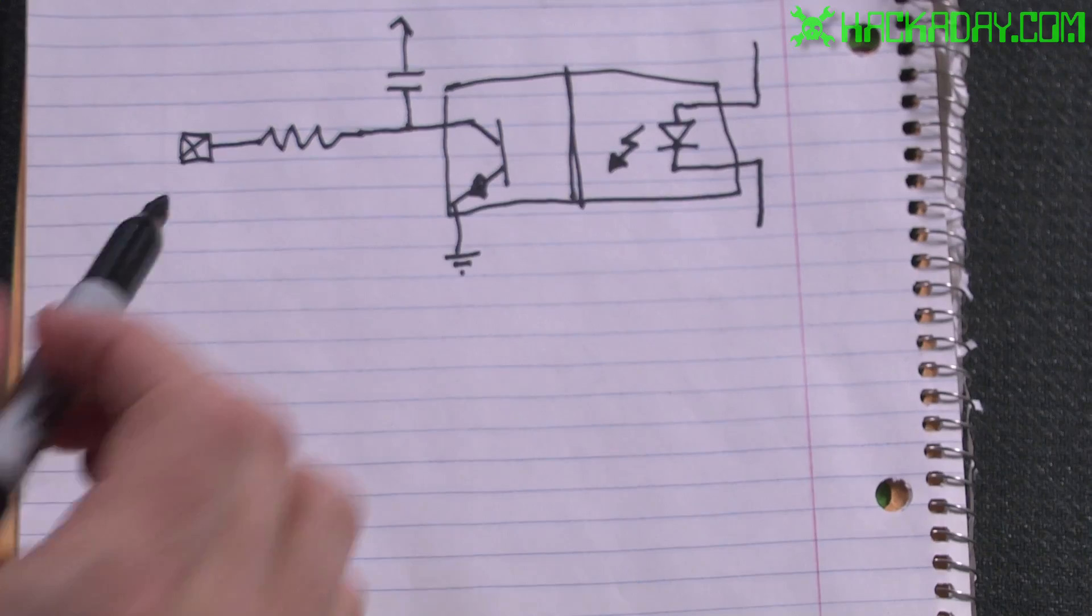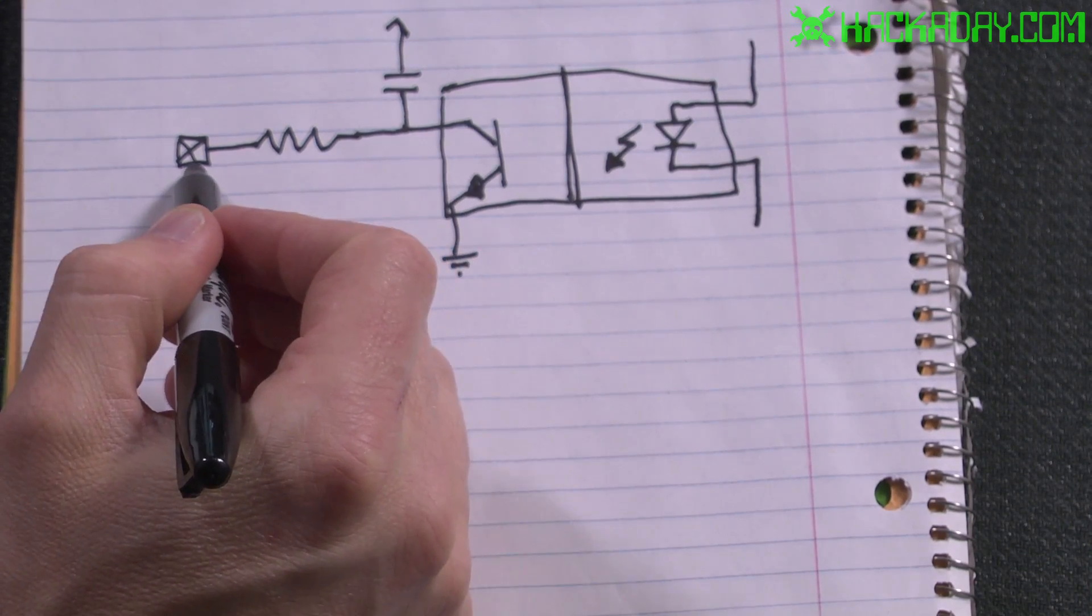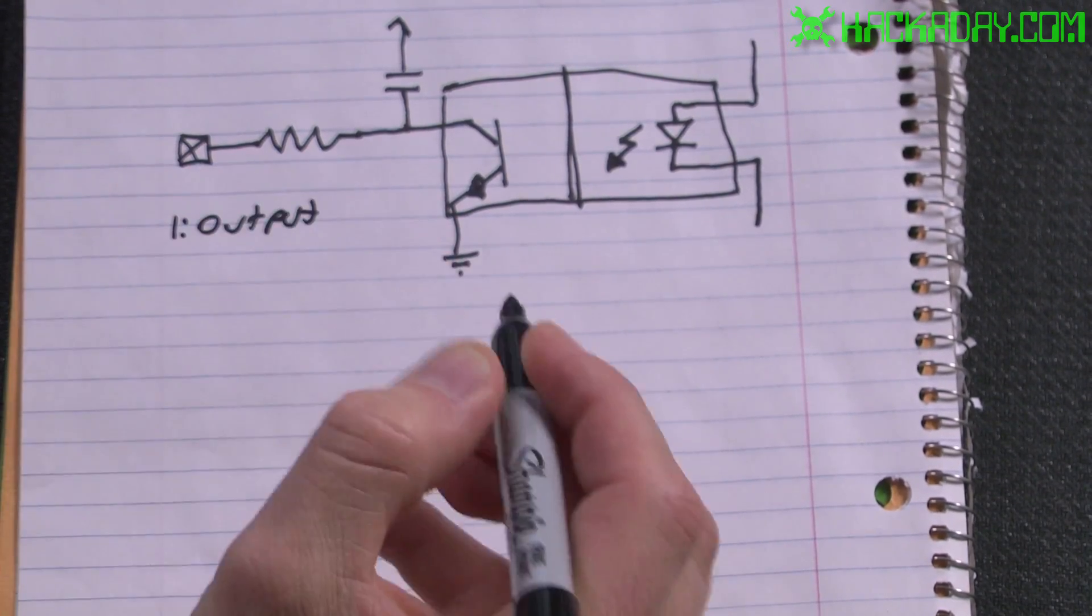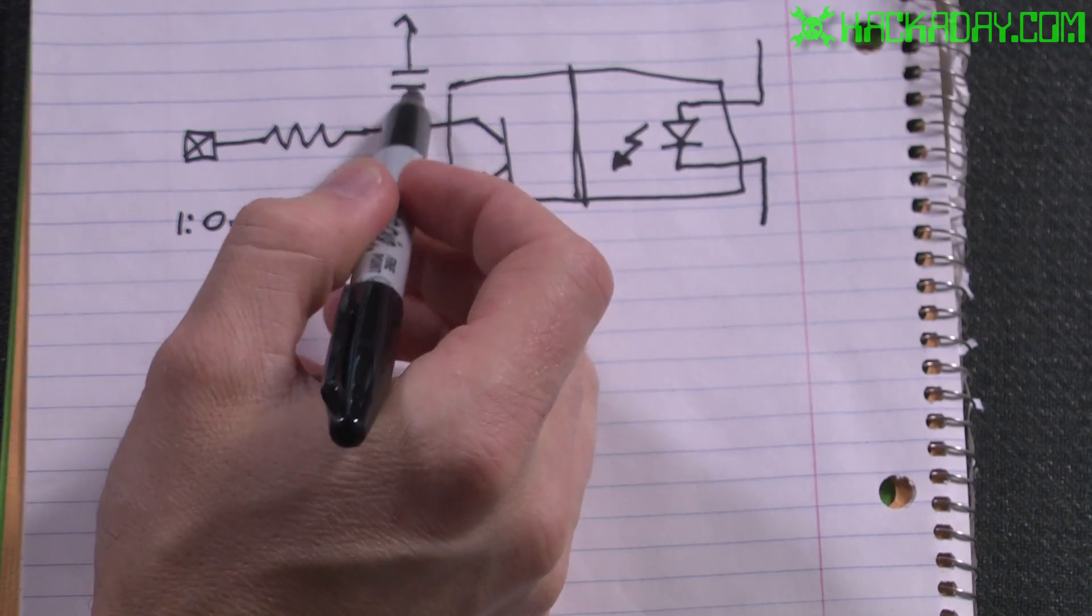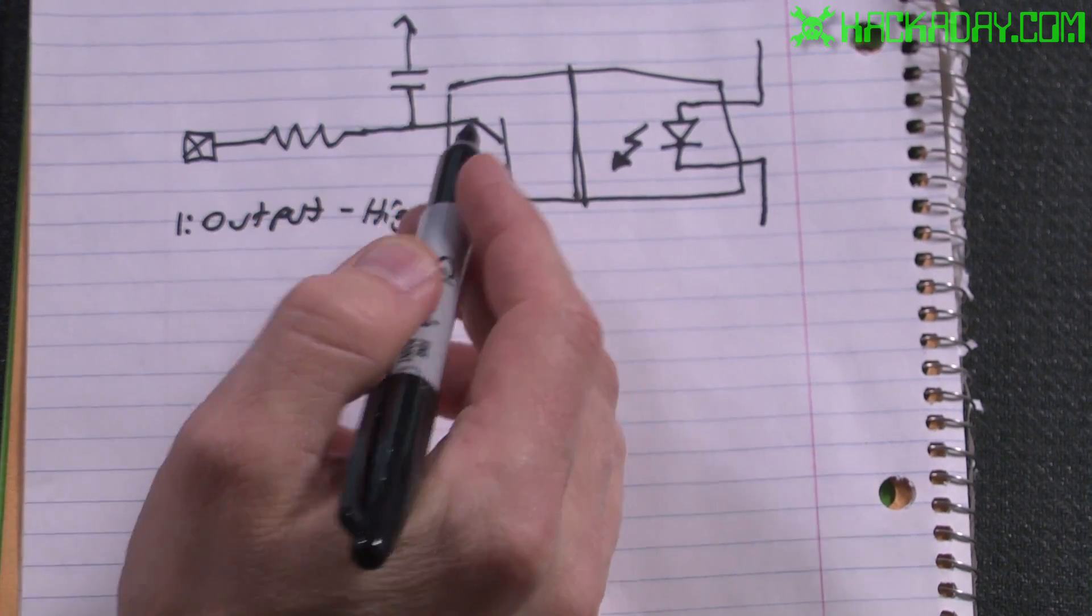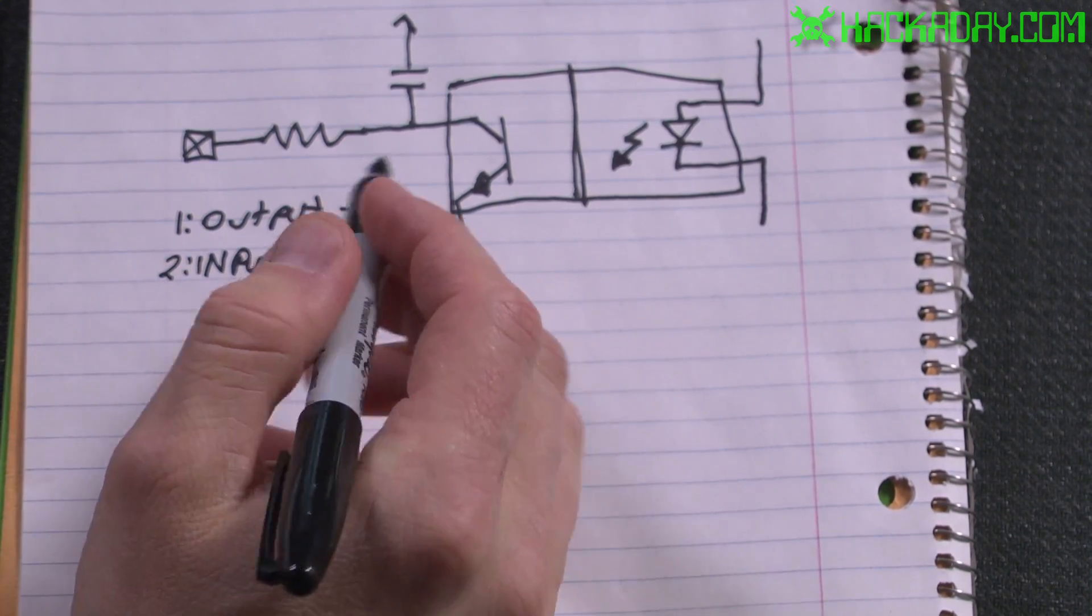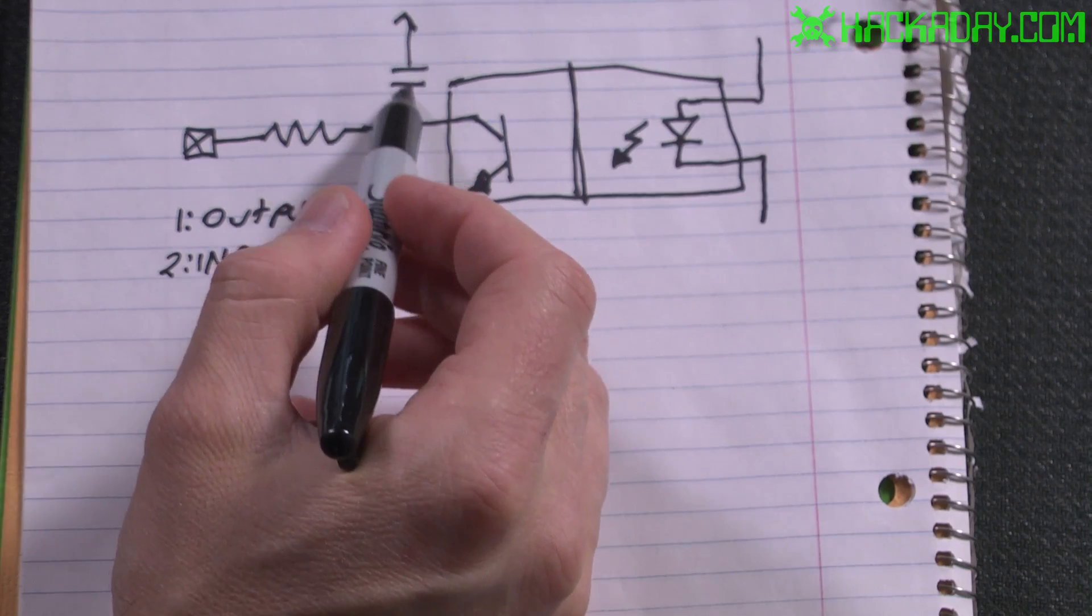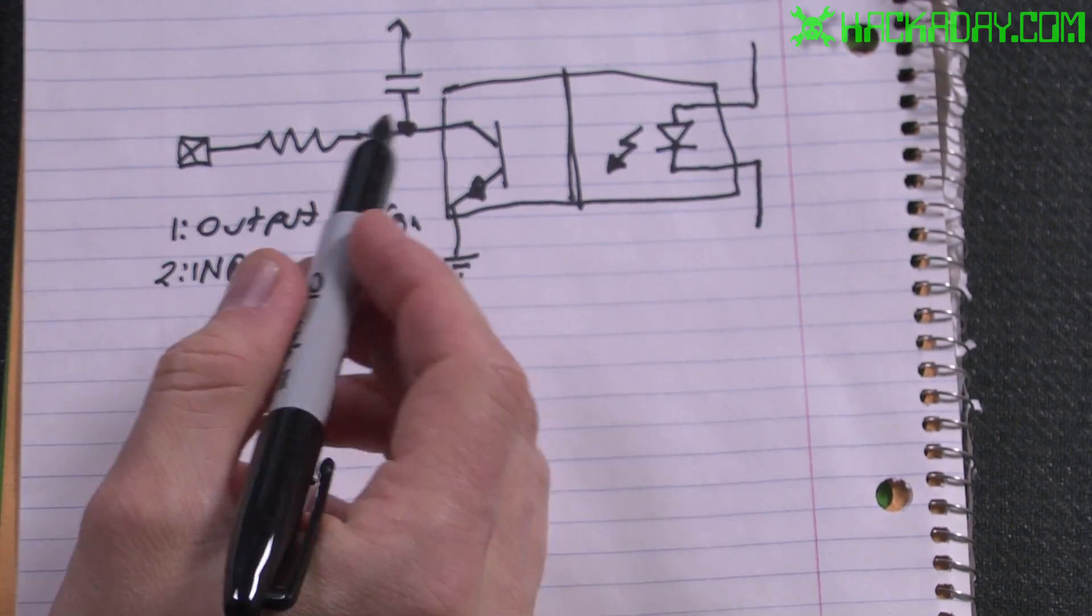So what happens is to read this sensor, the processor makes this pin an output and it drives it high. It takes this capacitor and essentially removes any voltage difference between the two sides. Then it becomes an input.